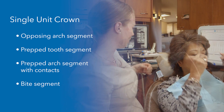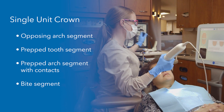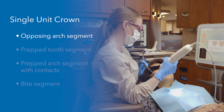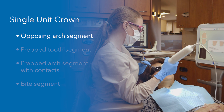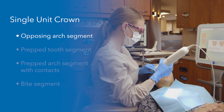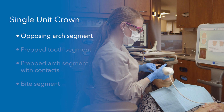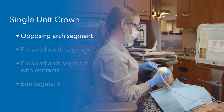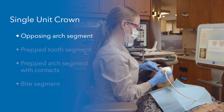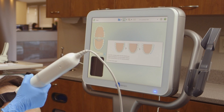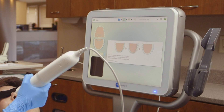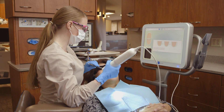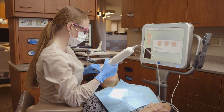It's important that I only scan the anatomy I want included in the model. The first segment is the opposing arch. In my practice, I typically have the assistant scan the opposing arch while the anesthesia is taking effect. The iTero Element scanner allows me to scan in a continuous motion. Using the guidance hints to remind me of the recommended scanning protocol, I'll begin by scanning the occlusal of the opposing arch segment.